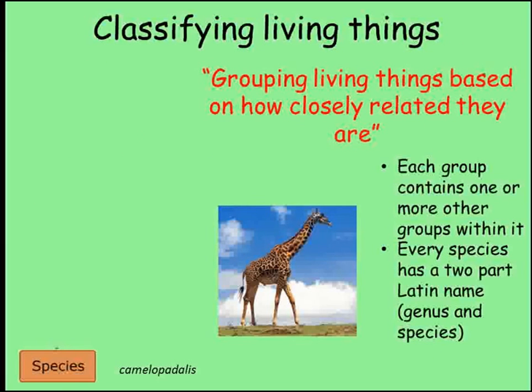So how are living things classified? Every living thing belongs to a species, which is usually defined as a group of individuals that can breed amongst themselves and produce offspring that are fertile. This definition, despite being the best that we have, is far from perfect, as some species reproduce asexually and some hybrids can be fertile. A hybrid is the offspring of members of different species. So a species is the most specific group that an organism belongs to.